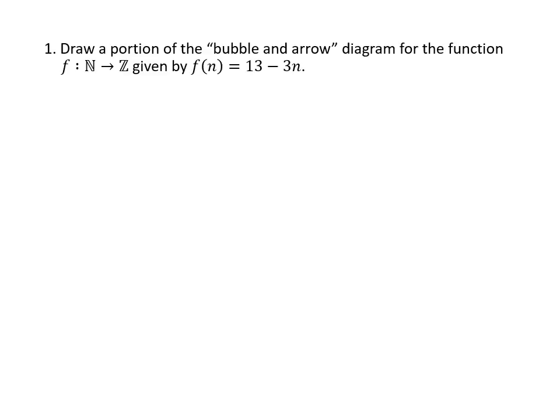This first question asks us to draw a portion of the bubble and arrow diagram for the function f which goes from N to Z, the natural numbers as the domain and the integers as the codomain, and the formula for this function is given by f(n) = 13 - 3n.